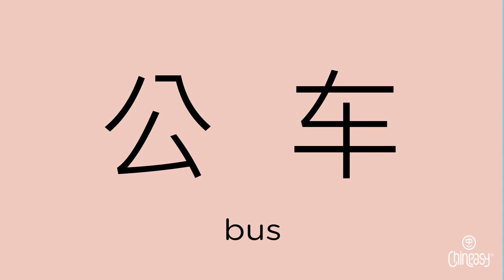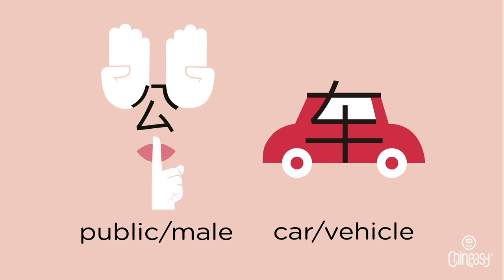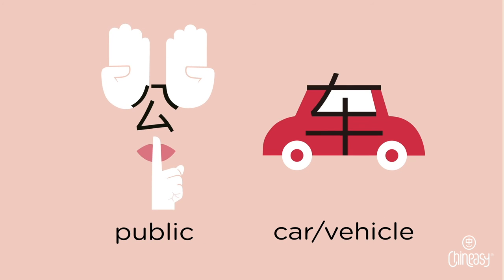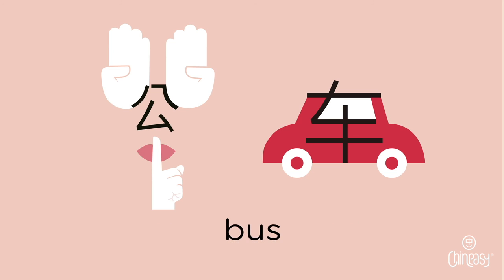Bus — a modern form of transportation is 公车. 公 means public or mail, depending on the context. Here it's public. A public vehicle — it's a bus, 公车.